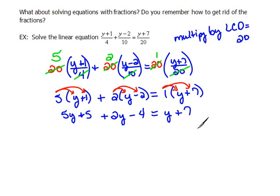Now, continuing on with our steps, we need to collect like terms on the same side of the equal sign. The 5y and the 2y can combine to give us 7y. A 5 and a negative 4 would combine to give us a positive 1. Equals y plus 7.